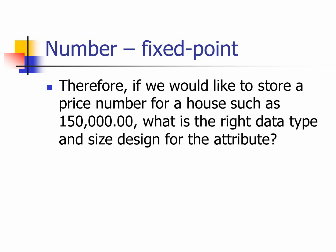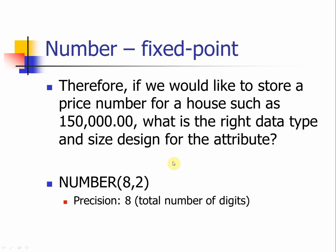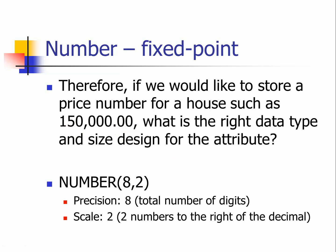Let's have a quick practice — bring out pen and paper. You don't need to submit this, but I want to make sure you understand. Say we want to purchase a house costing $150,000.00. What is the right data type and size to design for this attribute? The answer is NUMBER(8,2) because there are eight total digits and two digits to the right of the decimal. So the precision is 8 and the scale is 2.